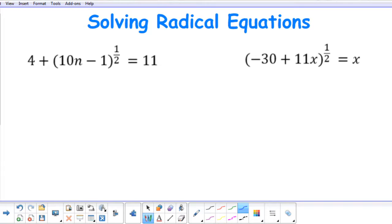So here in our first example, we are going to subtract 4 from both sides of our equation to leave me with the quantity of 10n subtract 1 to the 1 half equal to 7.